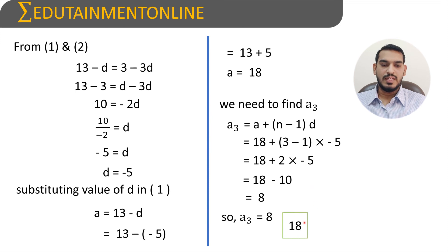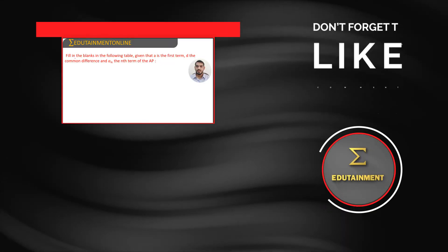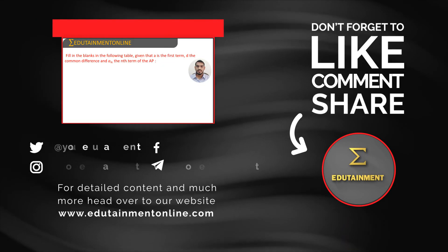Therefore the third term a3 is equals to 8. Therefore the AP is 18, 13, 8, and 3.